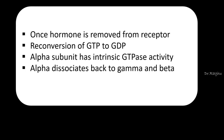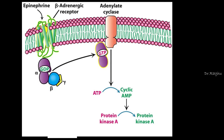Now let me explain this in a better manner by giving you an example. Again, this is the cell membrane — this is the extracellular part and this is the intracellular part. So let's say here the ligand is epinephrine and this is the G-protein coupled receptor, also called as the beta adrenergic receptor. It is a specific receptor for epinephrine.